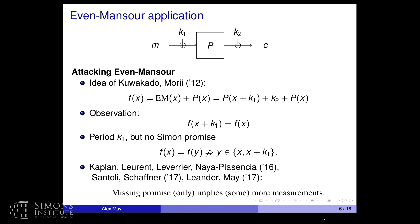Here is a very famous application: the Even-Mansour construction, used to construct a pseudorandom permutation. It is very simple and actually classically secure, but not quantumly secure. You take a permutation P on n bits — this P is unkeyed — and you key it by XOR-ing k1 and k2 at the beginning and end. It is a very simple construction, but it is not quantumly secure, and it took a long time to see an elegant argument for why.